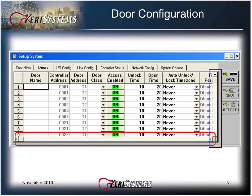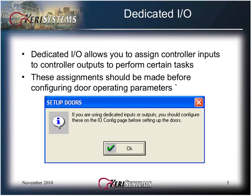Use the scroll bars to step through all configuration parameters and all DOORS. When accessing the DOORS tab, a pop-up window will appear instructing you to configure the dedicated inputs and outputs before setting up the DOOR parameters. Click OK to close this window.